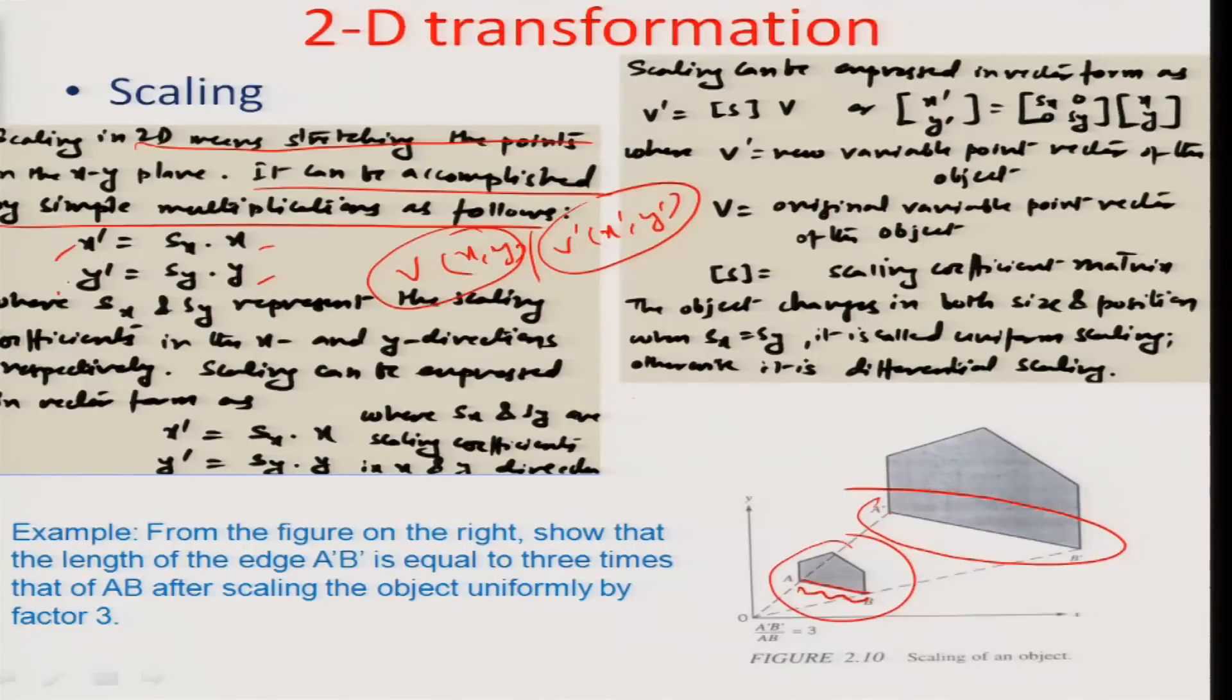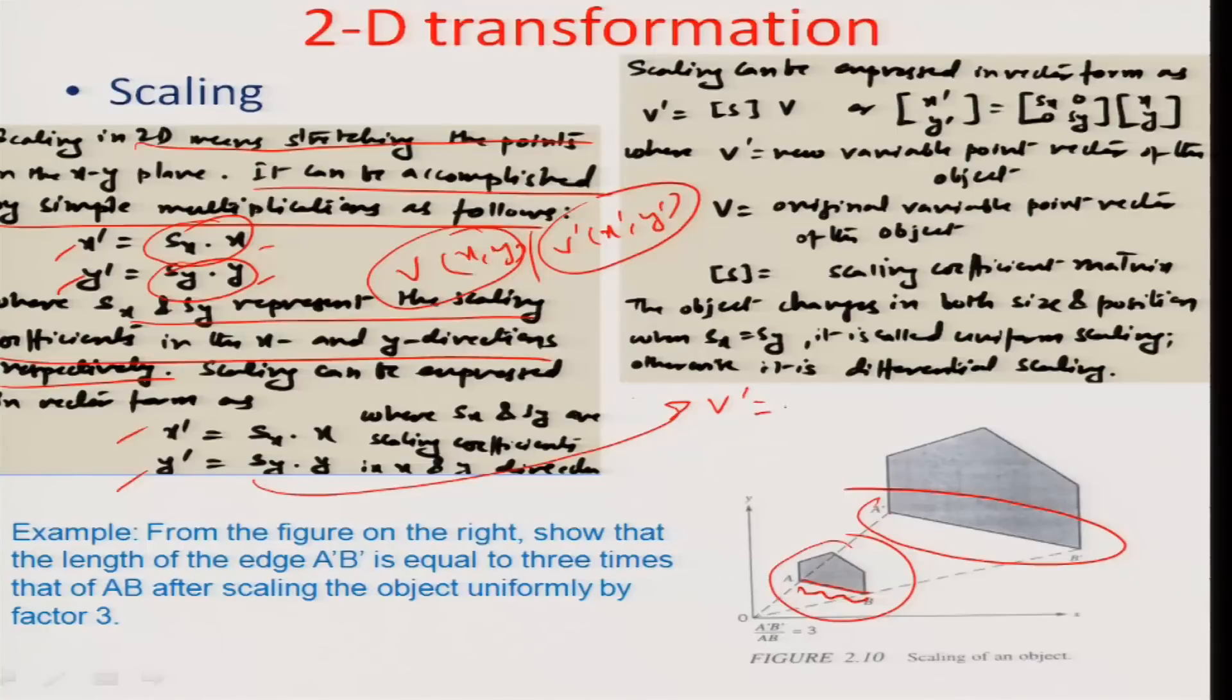x' and y', the new coordinate systems can be envisioned as sx·x and sy·y where sx and sy represents the scaling coefficients in the x and y directions respectively. Scaling can be expressed in the form of x' = sx·x and y' = sy·y. If I wanted to represent this in terms of a simpler matrix, I would write v' to be equal to some matrix S times v where this S can be represented as [sx,0; 0,sy].